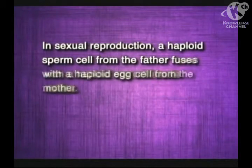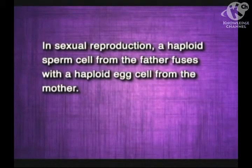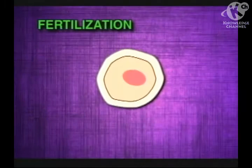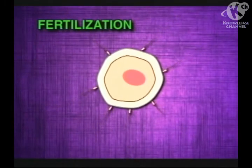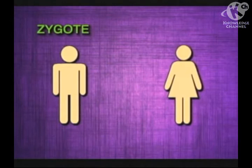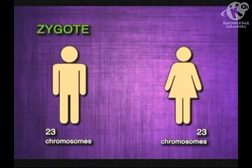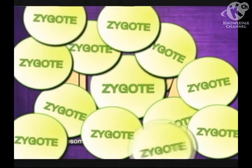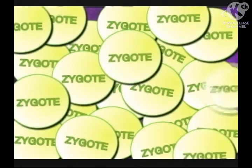In sexual reproduction, a haploid sperm cell from the father fuses with a haploid egg from the mother. This process is called fertilization. When an egg and sperm unite in fertilization, a diploid zygote forms. The zygote has one set of chromosomes from the male parent and another set from the female parent. In humans, both father and mother contribute 23 chromosomes each, so the zygote has 46 chromosomes. The zygote divides many times, producing a new diploid multicellular organism.